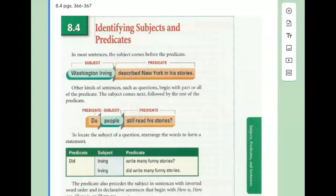8.4 deals with identifying subjects and predicates. Again, as a quick repeat, subjects are who or what the sentence is about and the predicate is whatever they do.